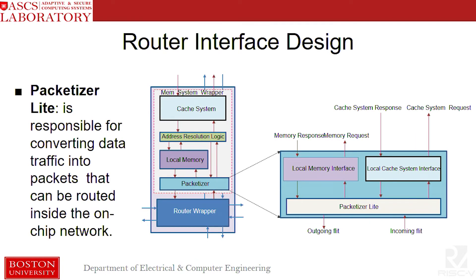The packetizer handles all the packetizing and depacketizing of data flow to and from the routers. It has two separate interfaces: one for the local memory and another for the memory interface. This allows any memory request which cannot be served by local memory to be sent directly to the router without going through the local memory. When this node is serving a request from a remote node, the packetizer has direct memory access so that it doesn't have to disrupt the other operations of the local memory hierarchy.